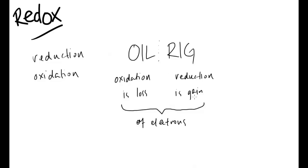What is reduction? Reduction is gain of electrons. When we look at the terms oxidation and reduction we have to look at some terms called oxidation states or oxidation numbers. These are numbers given to elements that tell us the number of electrons that have been gained or lost, depending on whether oxidation or reduction has taken place by that particular element.